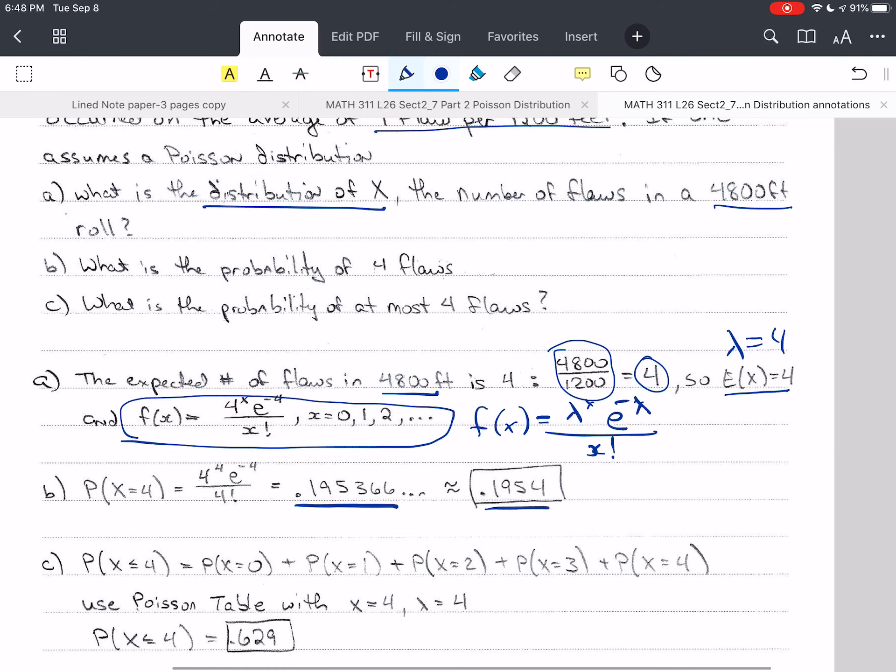And then we want to know the probability of at most 4 flaws. So 0, 1, 2, 3, or 4. But instead of adding up all of those, let's use the Poisson table with X equals 4 and lambda equals 4.